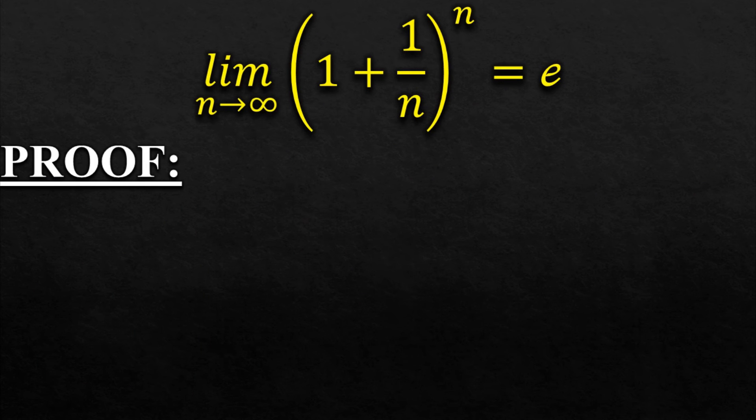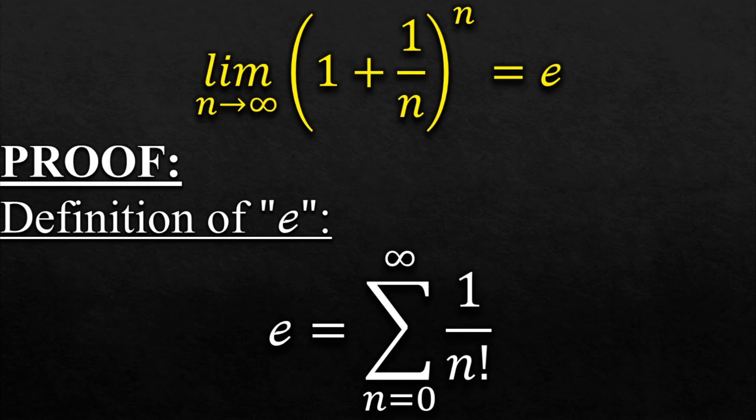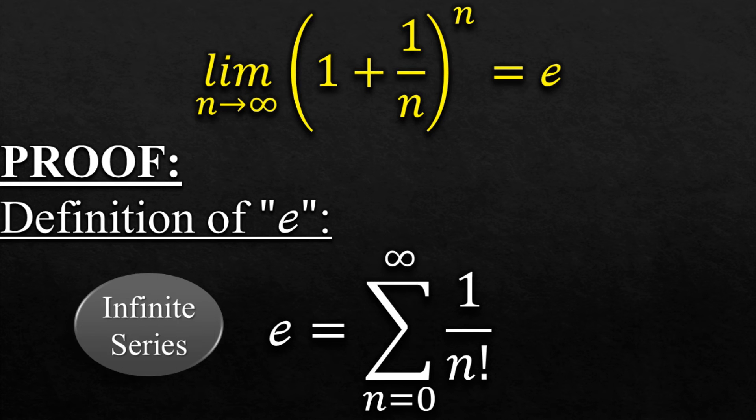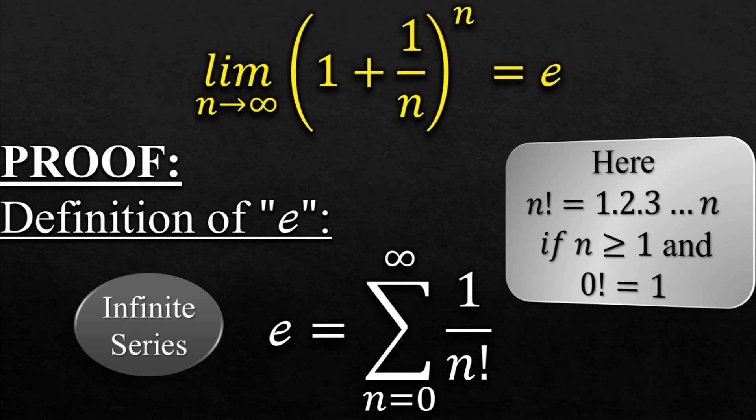Before jumping onto the proof, you need to know the definition of Euler number. So the Euler number is basically a series of 1/n! where n ranges from 0 to infinity. This means that this is an infinite series. Here n! is the product of natural numbers from 1 to n when n is greater than or equal to 1, and for n equals 0, 0! equals 1.